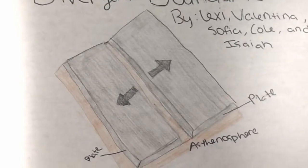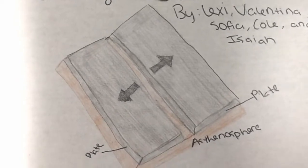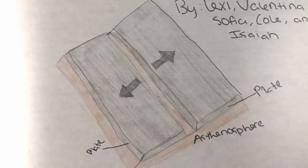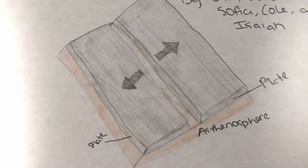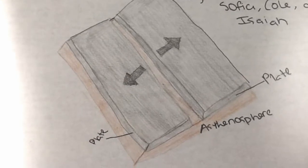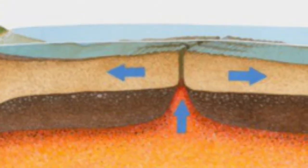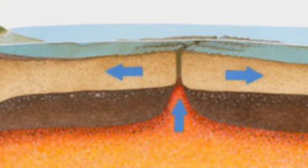Hi, this is Isaiah, Sophia, Valentina, Lexi, and Cole. We are going to tell you about divergent boundaries.